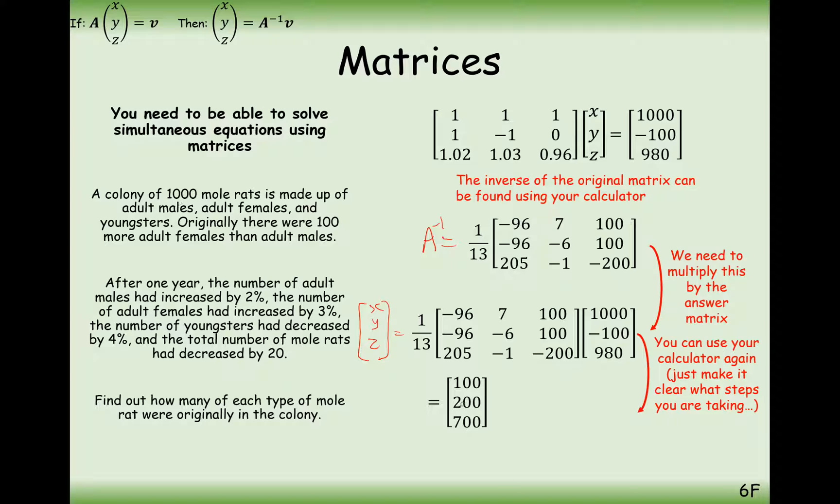It's a good idea just to do a double check of does this make sense according to our question. 1,000 mole rats in total - yes. 100 more females than males - yes. So a quick check. The final answer here is that there are 100 male adults, 200 adult females, and 700 youngsters.